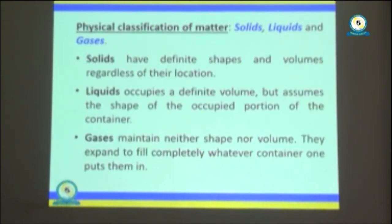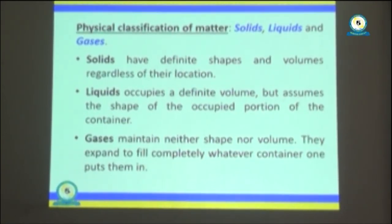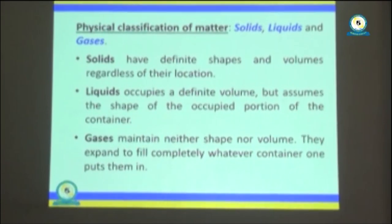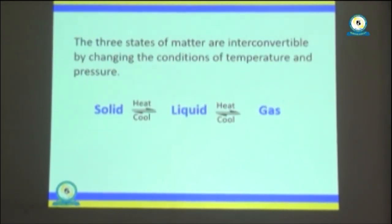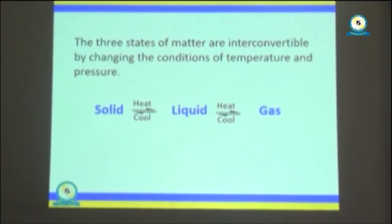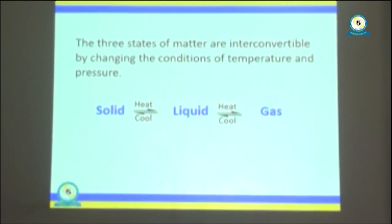Under the physical classification of matter, we say that you have solids, liquids, and gases. Solids have definite shapes and volumes regardless of their locations. Liquids occupy a definite volume but assume the shape of the container. While gases have neither definite shape nor volume — they expand and fill completely whatever container they are placed in. The three states of matter are interconvertible; solids can be converted to liquids and liquids can be converted to gas, and vice versa.